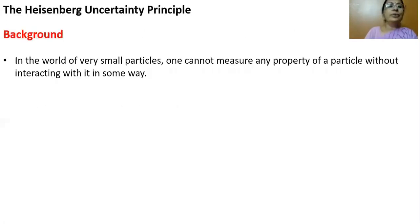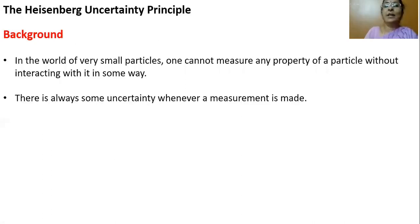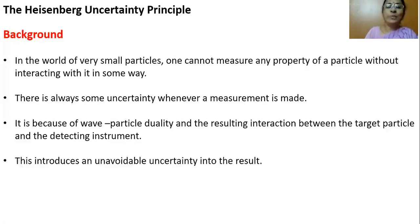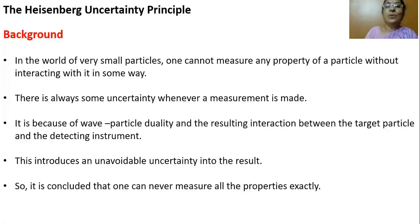Let me tell the background under which this uncertainty principle was stated. In the world of very small particles, one cannot measure any property of the particle without interacting with it in some way. There is always some uncertainty whenever a measurement is made, because of wave-particle duality and the resulting interaction between the target particle and the detecting instrument. This introduces an unavoidable uncertainty into the results, so one can never measure all properties exactly.